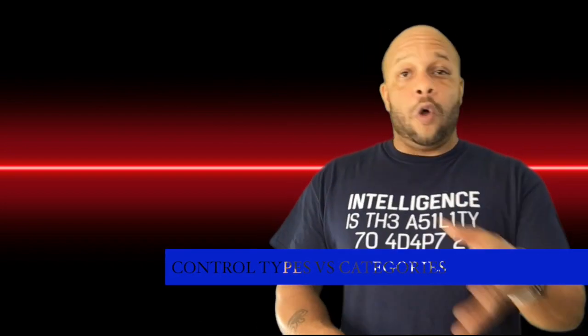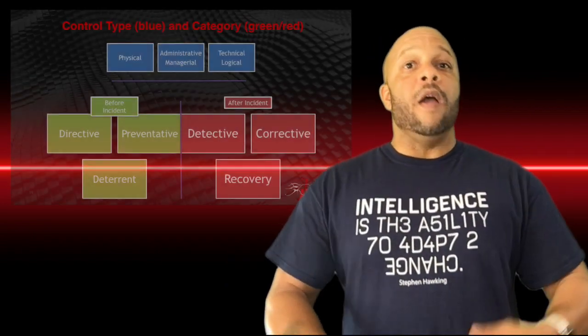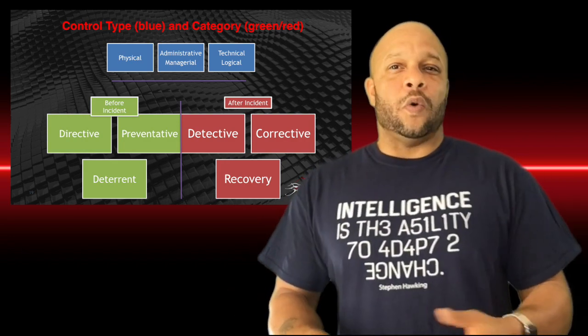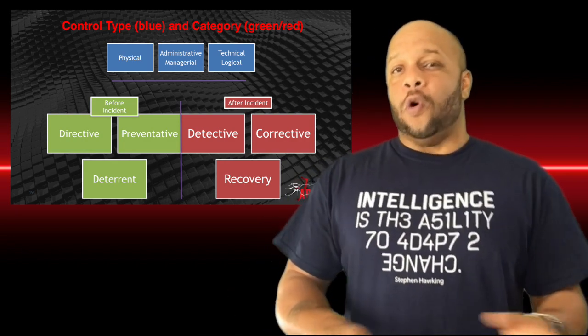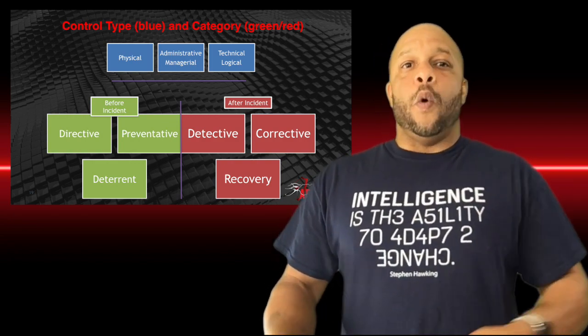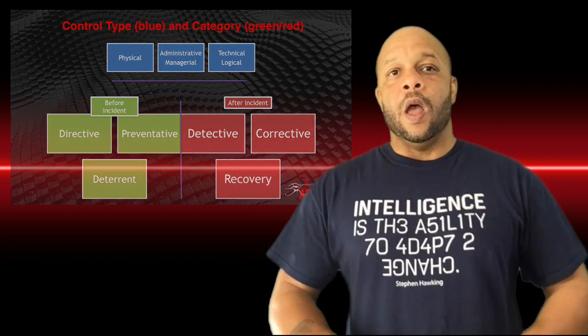Be sure to keep separate the difference between control types and control categories. Control types are physical, administrative or managerial, and technical or logical. Control categories are directive, preventative, detective, or corrective, as well as deterrent and recovery. Directive, preventative, and deterrent are proactive control categories, whereas detective, corrective, and recovery are passive in nature — they only come into account after an incident has been realized.